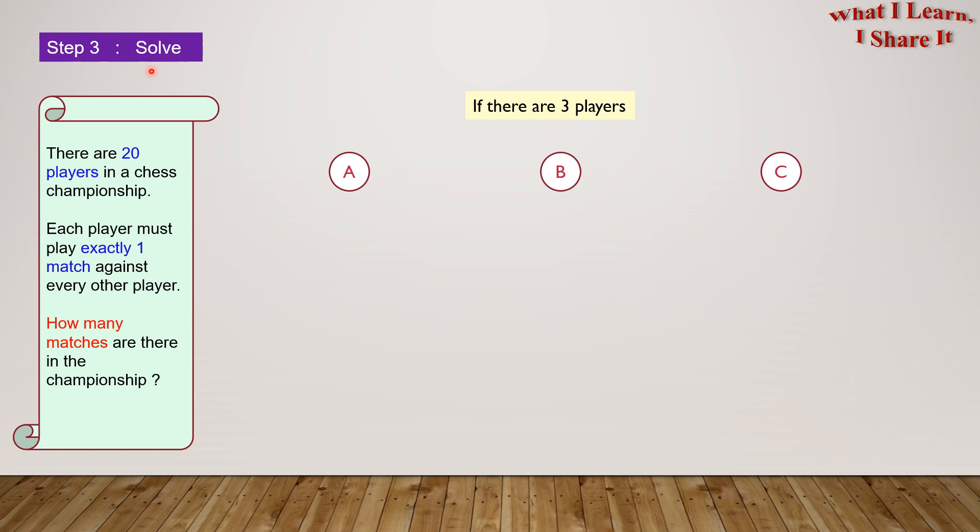Step 3: Solve. Let's assume there are three players right now. A will play with B and we'll get an A-B combination. Then A will play with C and we'll get an A-C combination. In the same way, B will play with A and we'll get a B-A combination. And B will play with C and we'll get a B-C combination.